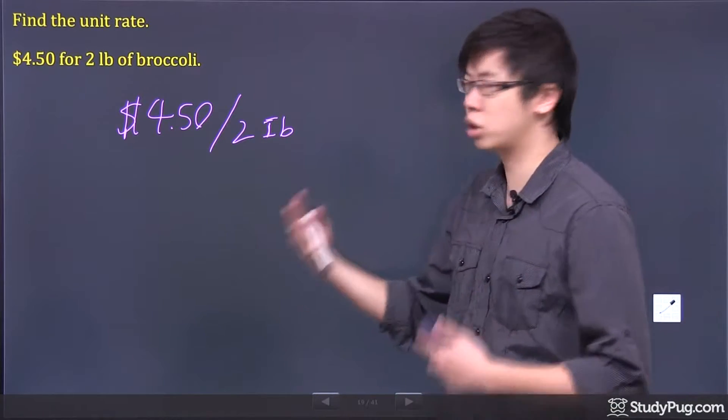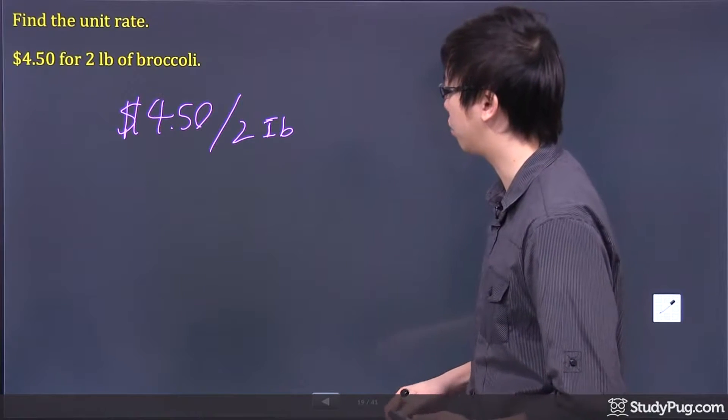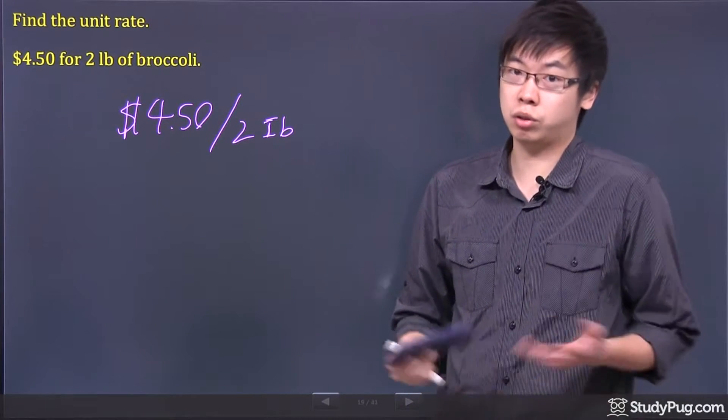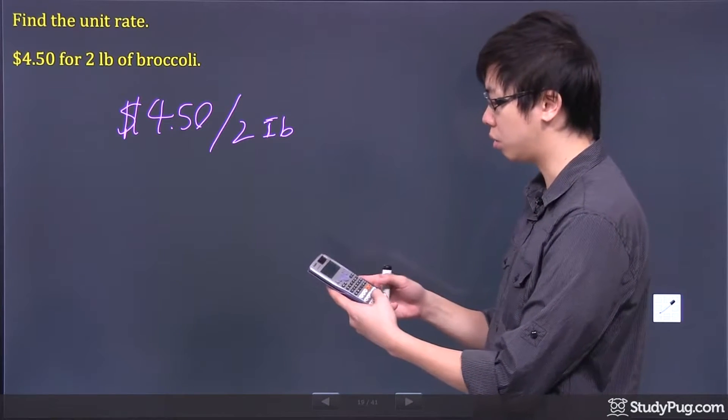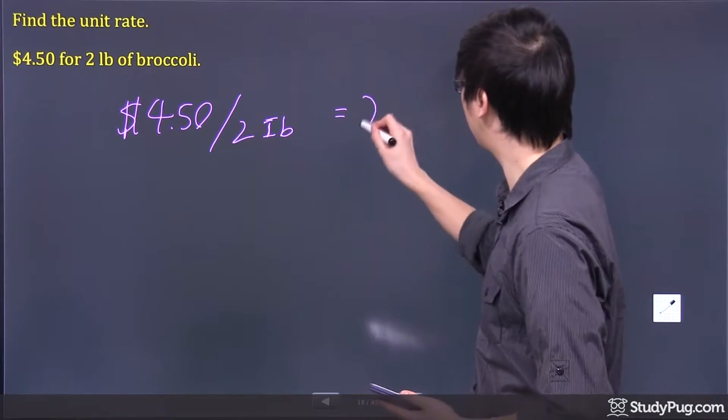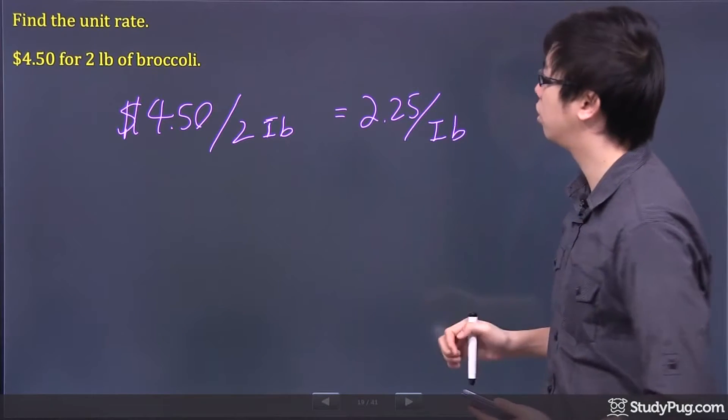Let's try. Basically, we're trying to figure out the price for just one pound of the broccoli. So, all you have to do is grab a calculator. It's probably the easiest way. Just go 4.5 and divide by two. You get 2.25 divided by one pound of the broccoli.